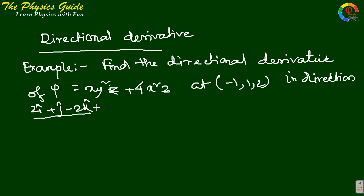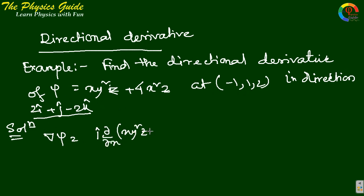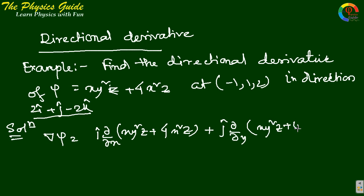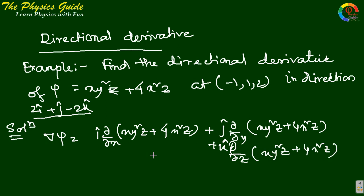We solve it in two parts. First, grad psi equals i-cap times del/del-x of (x·y²z + 4x²z), plus j-cap times del/del-y of (x·y²z + 4x²z), plus k-cap times del/del-z of (x·y²z + 4x²z).